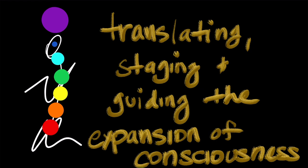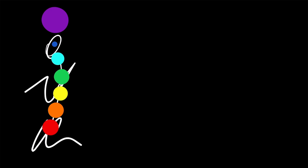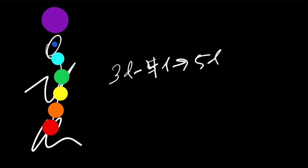This video explains how we can translate, stage, and even guide the expansion of consciousness using the framework of the human energy body. To begin with, I want to talk a little bit about stages or dimensions of consciousness, because you hear people talk about this a lot. You hear people say, oh my gosh, that person's totally in the 3D, that person's in the 4D, that person's in the 5D — meaning the third dimension, fourth dimension, fifth dimension of sort of their being, their human experience, their consciousness.